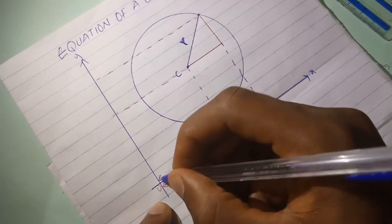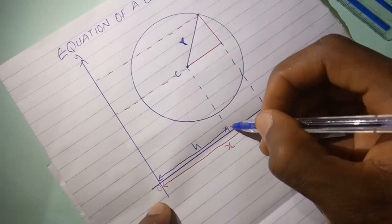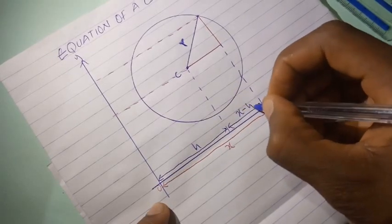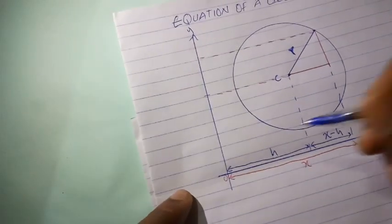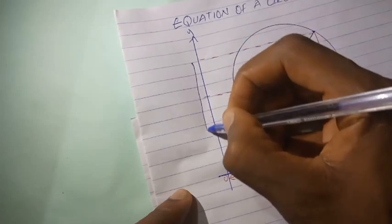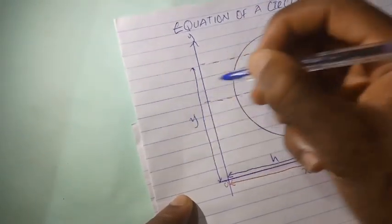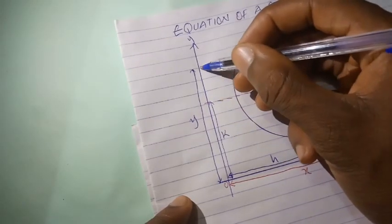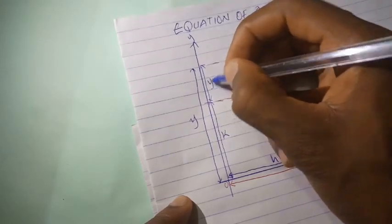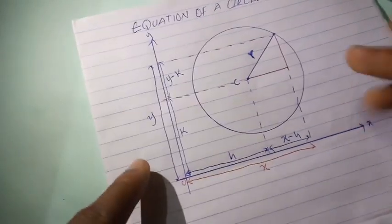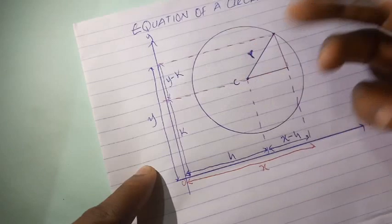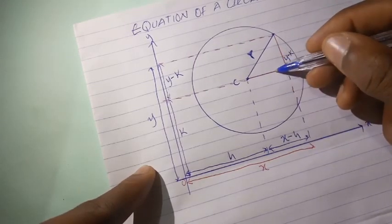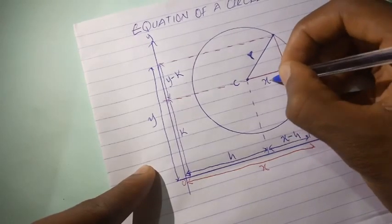If I label the point down here as h, then the distance from that point to the point on the circumference along the x-direction would be x minus h. On the y-axis, if I label from this point to the origin as k, then this corresponding point would be y minus k. So the horizontal side of the triangle is x minus h and the vertical side is y minus k.